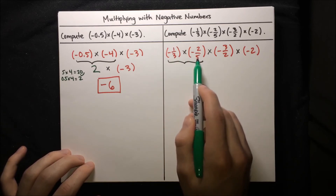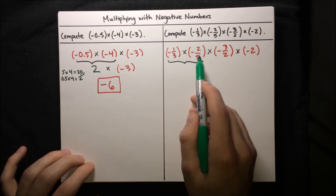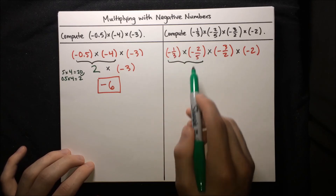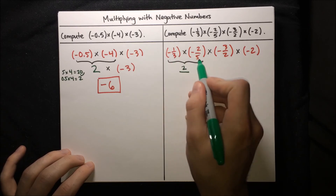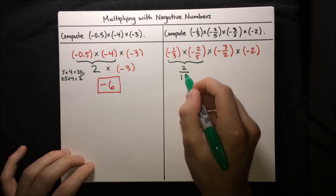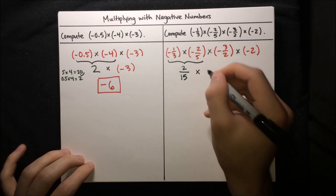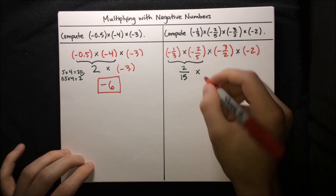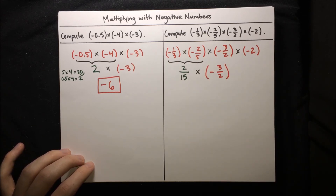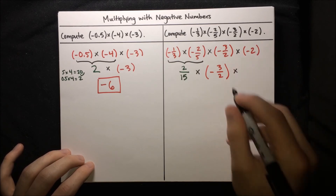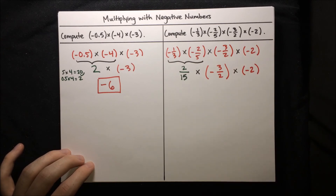Multiplying fractions, we multiply numerators straight across and denominators straight across. So the numerator is 1 times 2, which is 2, and the denominator is 3 times 5, which is 15. That gives us positive 2/15. Now we multiply 2/15 by the next term, negative 3/2, and carry along our last term, negative 2, for the next step.